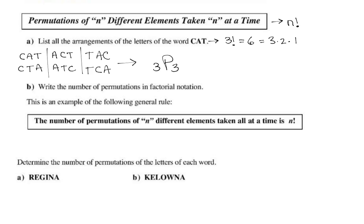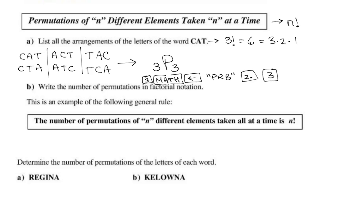Let's learn how to do that on the calculator. Hit the number 3, then hit Math, then go over to the probability tab — I usually just hit left once. Then it's number 2. It will show up on your screen, and then hit 3 after that. Make sure you know how to type 3P3 and get 6 to show up.